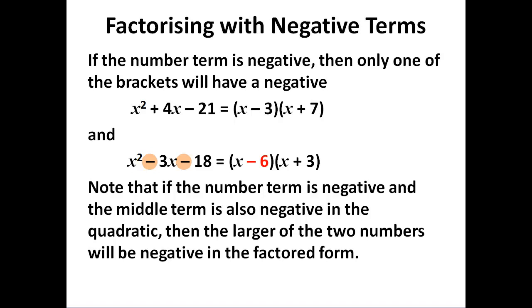If the middle term is negative, then it means the larger of the two factor numbers is negative. You have to be careful that the number that you want here is negative, then this number must be bigger than this number.